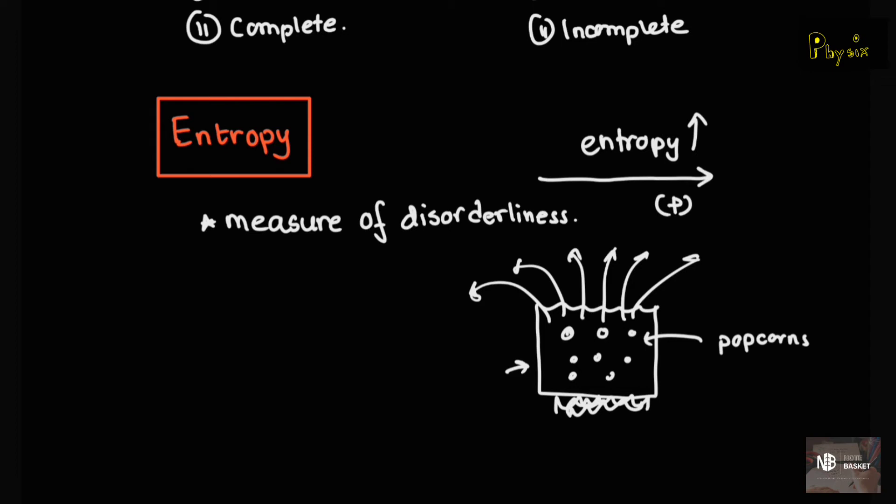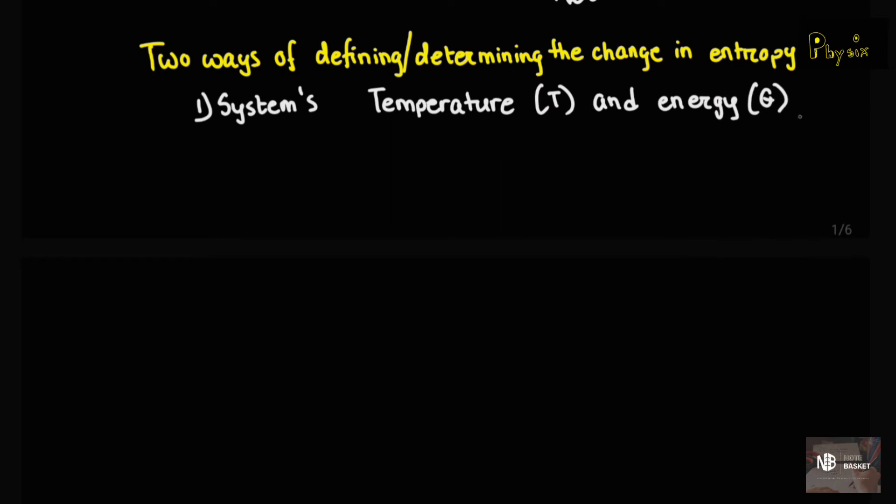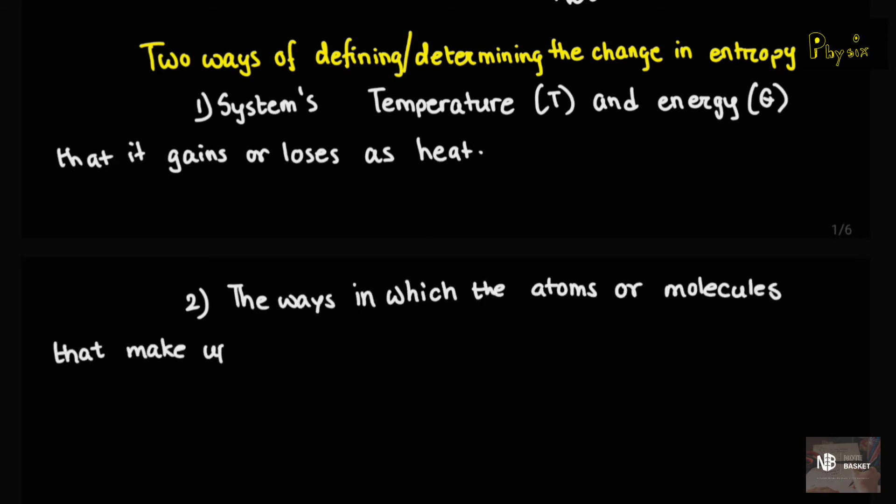Well, there are two particular ways by which we can define the change in entropy. One, in terms of the system's temperature and energy that the system gains or loses as heat. And two, by counting the ways in which the atoms or molecules that make up the system can be arranged. Well, primarily, we are only going to work with the way that is pointed in number one over here.